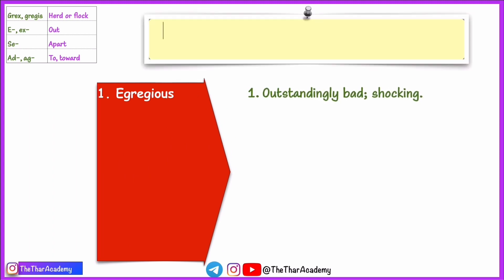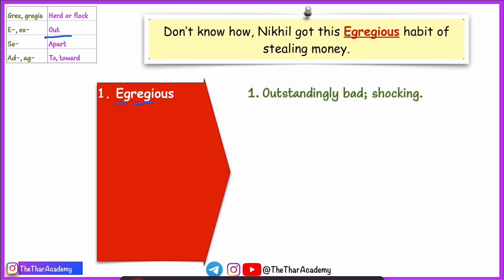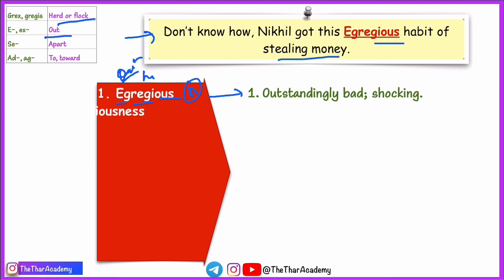Our first word is 'egregious.' The prefix here is 'e,' meaning out. 'Greg' means flock or herd — your group. The suffix '-ous' is a common adjective suffix. This word means outstandingly bad or shocking. For example: 'I don't know how Nikhil got this egregious habit of stealing money.' Egregious means very bad — so it's a very bad habit. The noun form is made by adding the suffix '-ness': egregiousness.